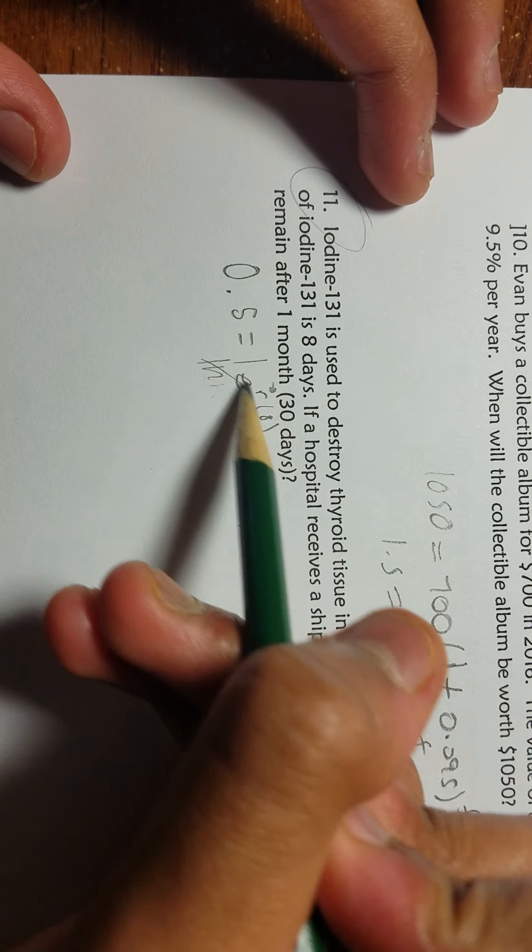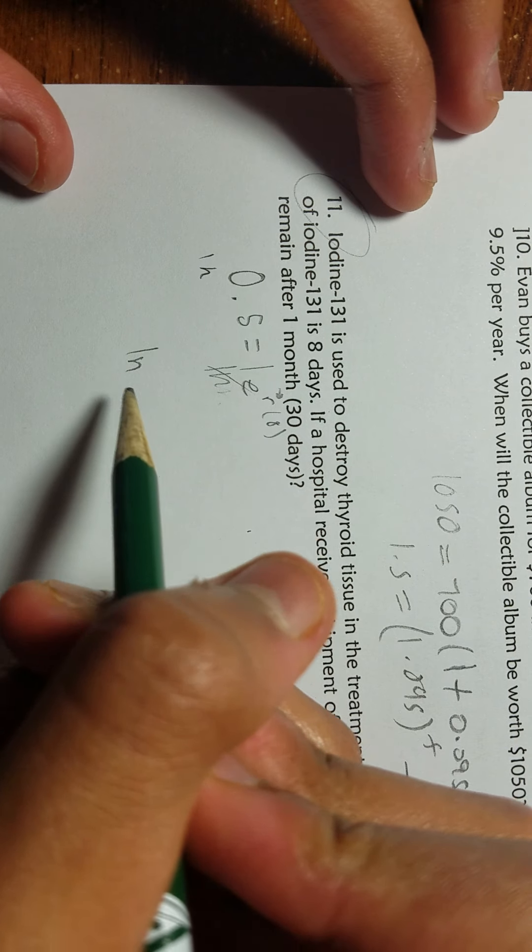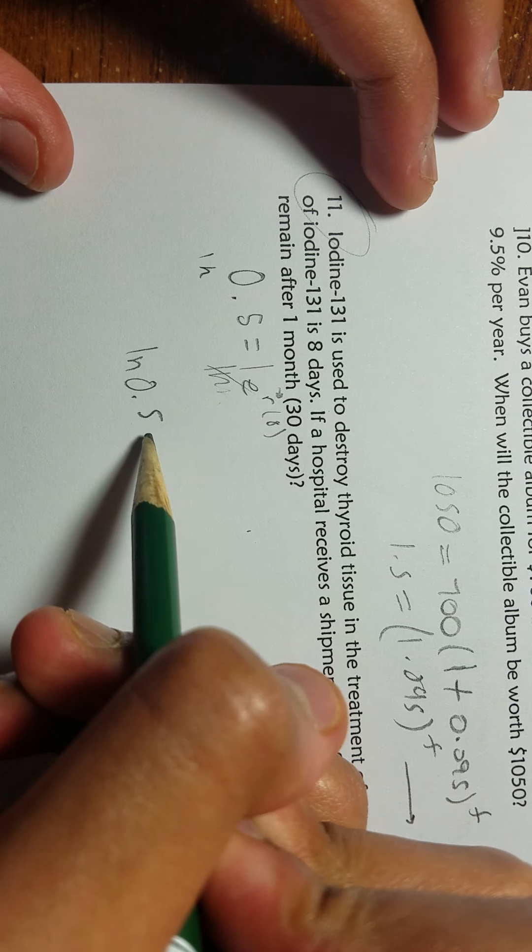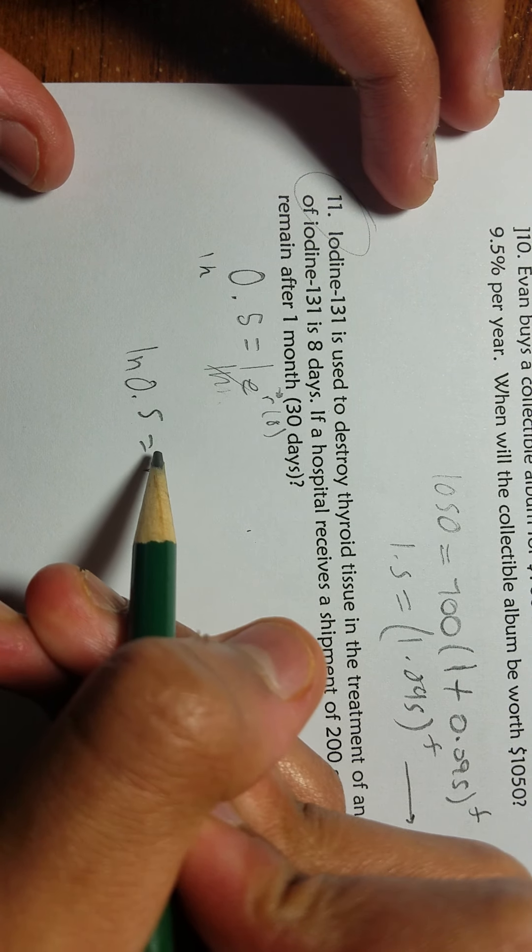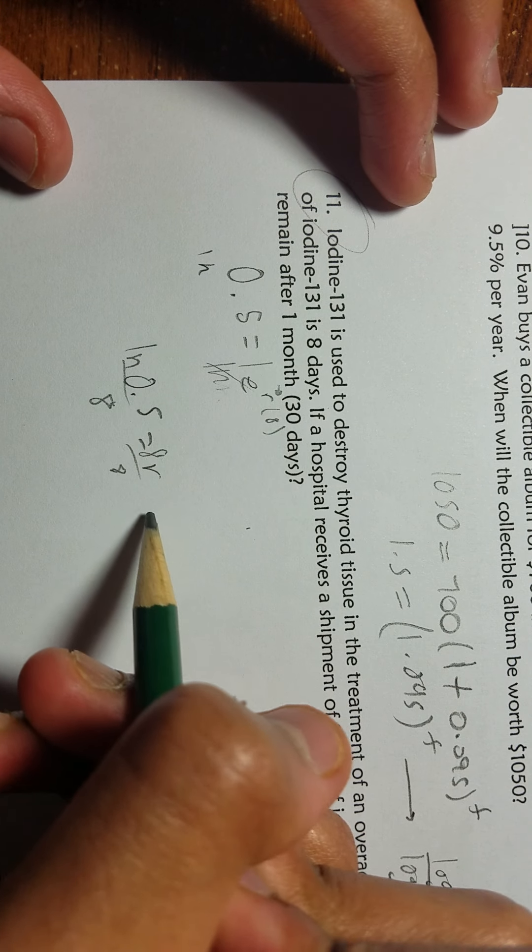Natural log takes that out, so now we have ln(0.5) equals 8r. We need to do natural log on this side as well. Divide the 8 on both sides. Now we have ln(0.5) over 8 equals r.